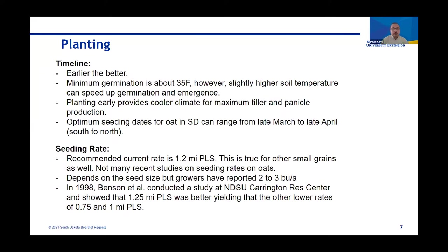When it comes to planting oats, the saying is 'earlier the better — beat the heat.' Small grains like cooler weather for vegetative growth. The textbook germination temperature is 35°F, but above 40°F always speeds up germination and emergence. Planting early provides cooler conditions for maximum tiller growth and panicle development — the oat head is called a panicle — so you can beat the July heat in our environment, get better panicle fill, higher yield, and better quality seed.